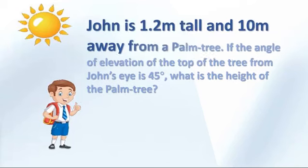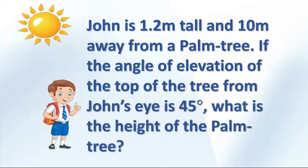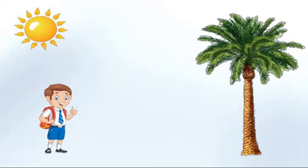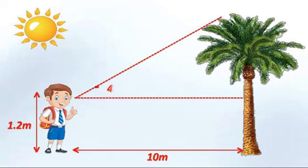Now, we have a question here that says, John is 1.2 meters tall and is about 10 meters away from a palm tree. If the angle of elevation of the top of the tree from John's eye is 45 degrees. Now, the question says, what is the height of the tree? How will John measure the height of the tree using the angle of elevation and, of course, his distance? Now, the first thing to do here, we have to impute the values given in the question into the picture we have right here on the screen. John's height is 1.2 meters. The distance between John and the tree is 10 meters. The angle of elevation of the top of the tree from John's eye is 45 degrees. And this is our diagram.